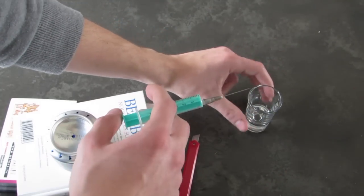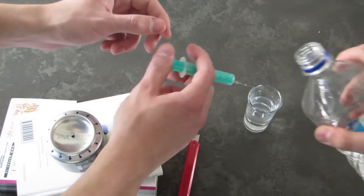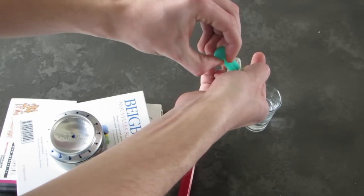After that, take alcohol and pour it into the stove using a syringe.